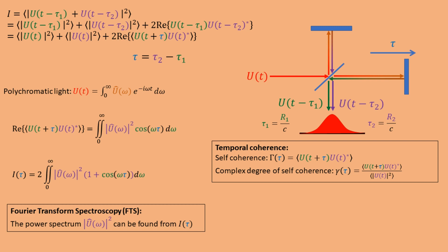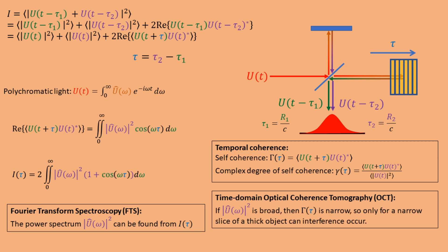This result means we can reconstruct the spectrum of a light field using a Michelson interferometer in a method called Fourier transform spectroscopy. We move one mirror to change the time delay tau, measure the intensity as a function of tau, and then Fourier transform the result to find the spectrum. These results also motivate the self-coherence, which tells us how much a field u is correlated with itself a time-delayed tau later. We can normalize the expression to find the complex degree of self-coherence. Another application of this setup is optical coherence tomography (OCT), where we inspect a thick sample slice by slice. If we use light with a very broad bandwidth, then the interference term is large for only a very narrow range of tau, so by moving the sample we can decide for which slice interference occurs, allowing us to study the sample slice by slice.